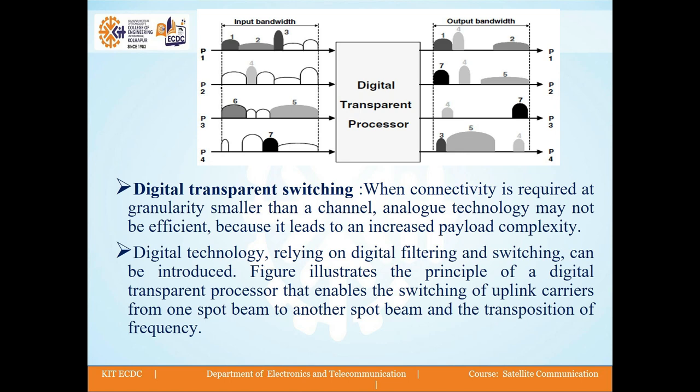Next is digital transparent switching. When connectivity is required at a granularity smaller than a channel, analog technology may not be efficient because it leads to increased payload complexity. In this case we need to use digital transparent switching. Digital technology relying on digital filtering and switching can be introduced here. The figure shows the principle of the digital transparent processor (DTP) that enables the switching of uplink carriers from one spot beam to another spot beam, and the transposition of the frequency.